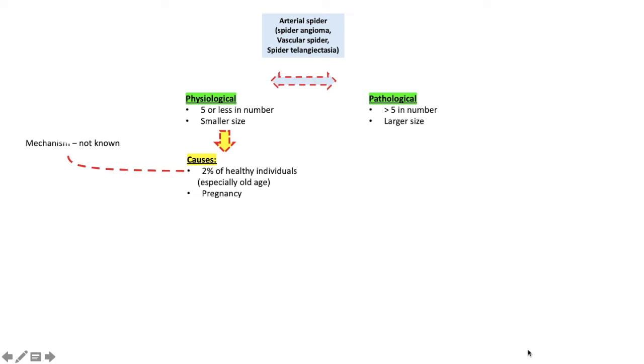Why it occurs in two percent of healthy individuals, the mechanism is not known. But why it occurs in pregnancy, the mechanism is well known: increased estrogen acting as a vasodilator.